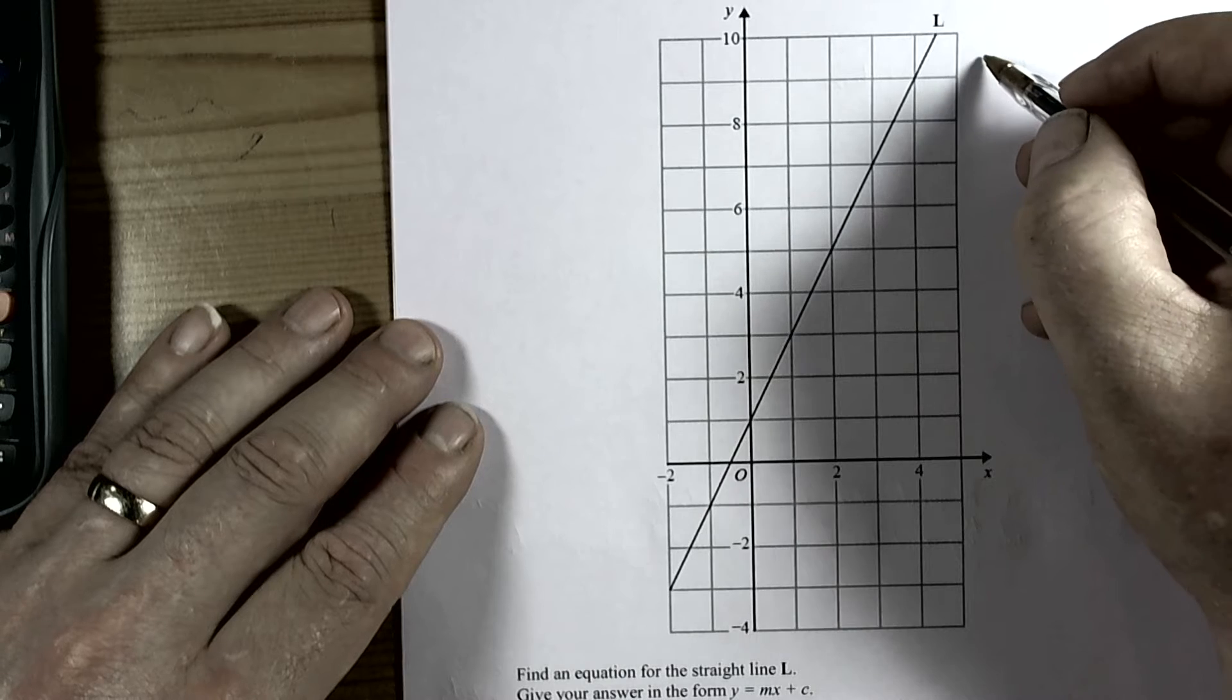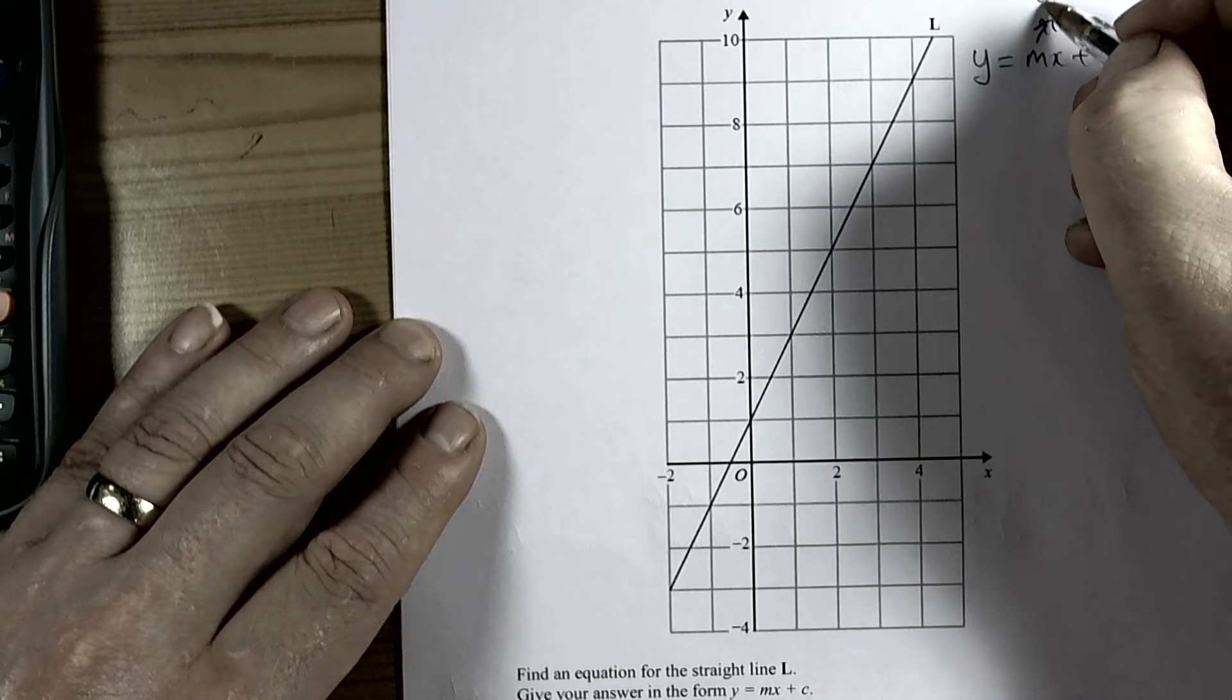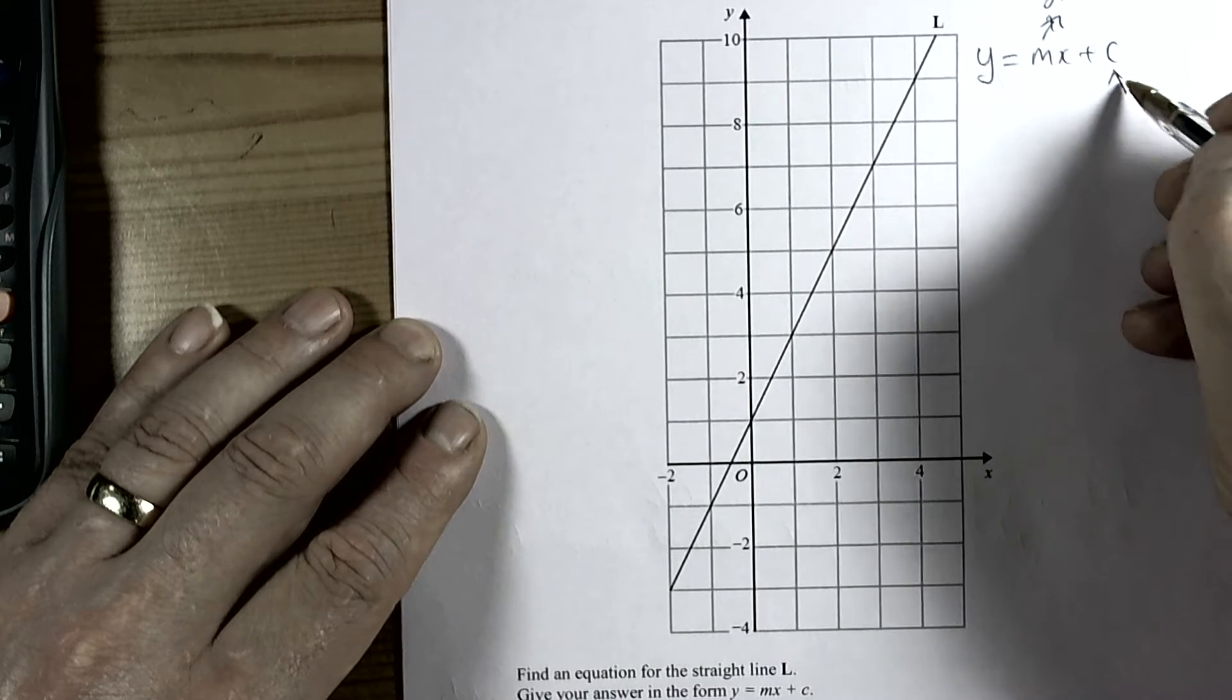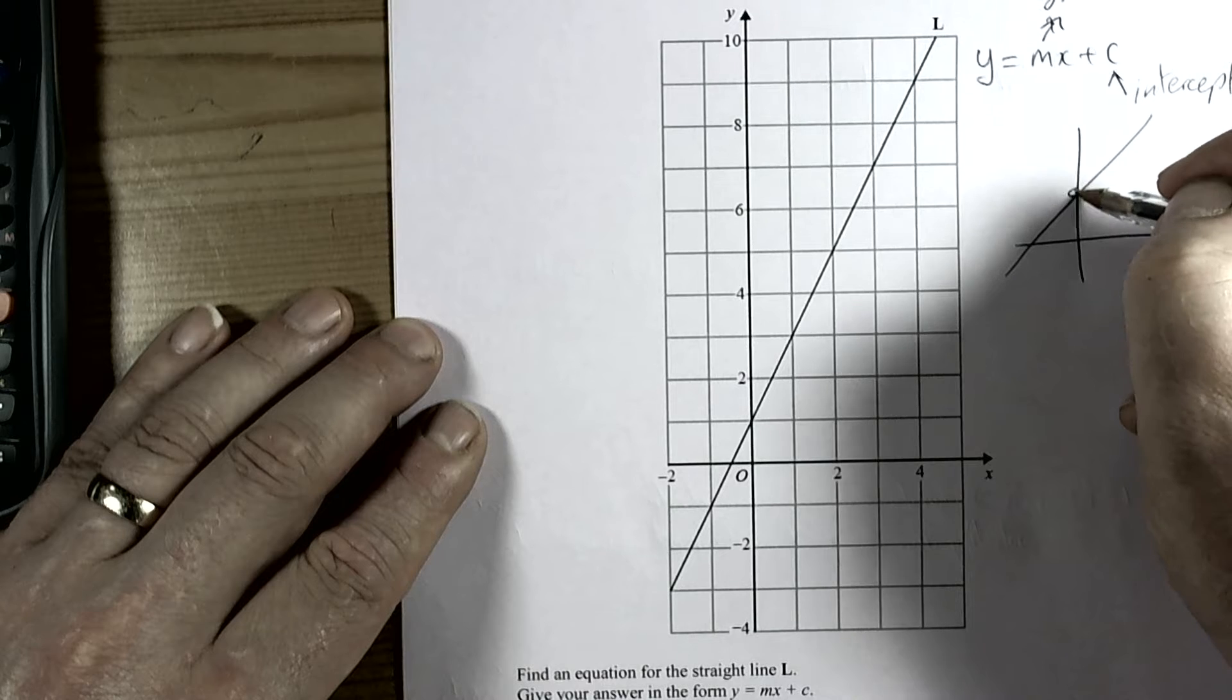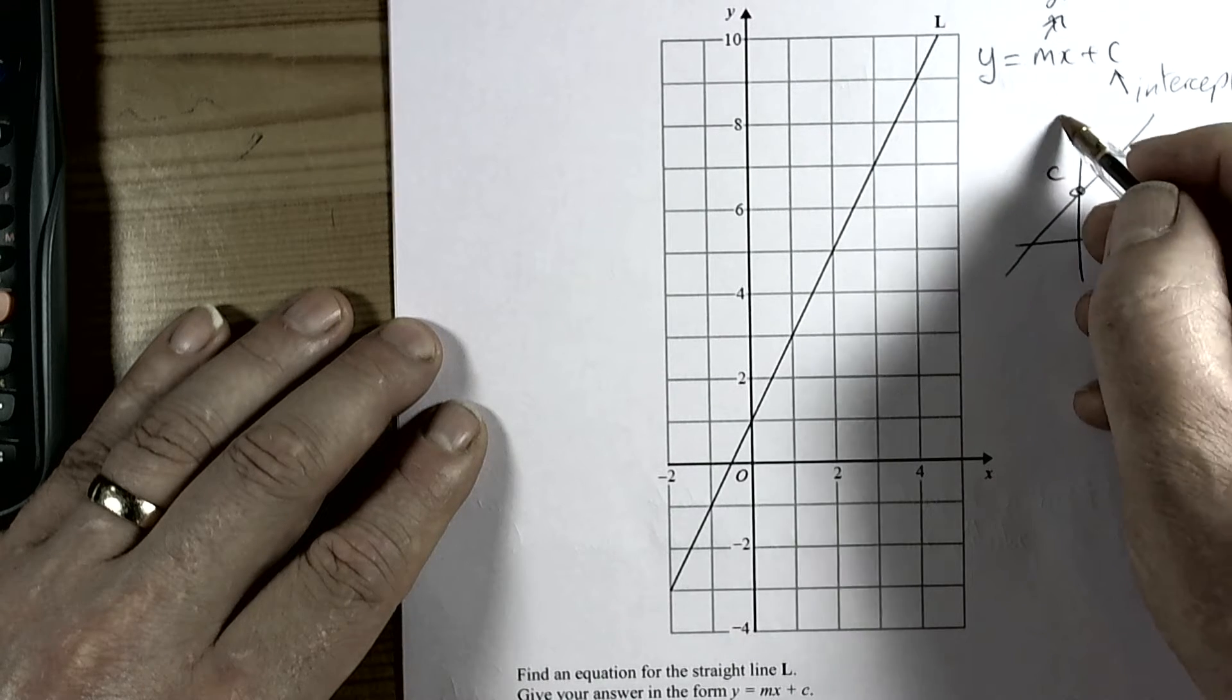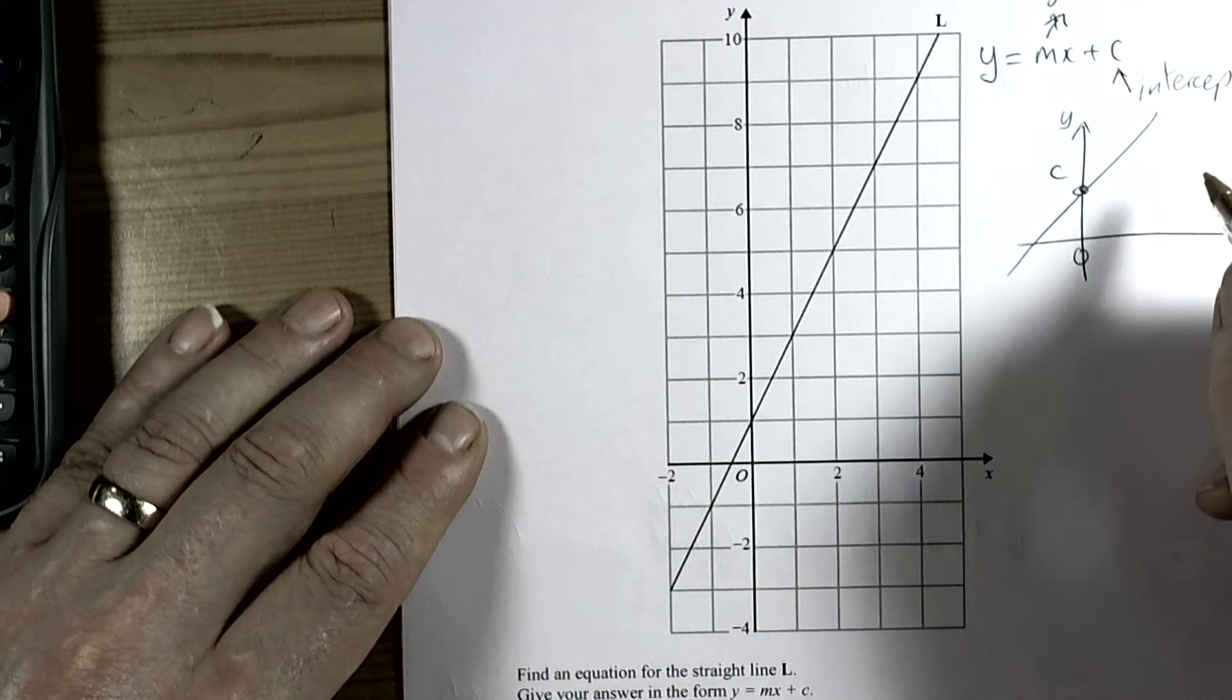Things we need to remember: in y equals mx plus c, m is the gradient of the line, how steep it is, and c is known as the intercept point. Basically, on any straight line, c is where the graph crosses the y-axis when x is zero, or whatever axis is vertical, the horizontal number must be zero.